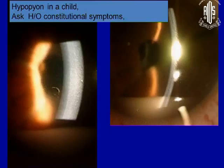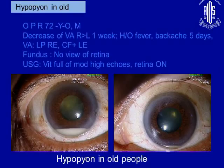When dealing with patients at the extremes of age, remember that idiopathic uveitis does not typically occur at the extremes of age. A young child presenting with a hypopyon and lot of cellular reaction turned out to have leukemia. Similarly, a 70-year-old presenting with hypopyon without history of trauma or surgery — think of a systemic masquerade. In this particular case it turned out to be non-Hodgkin's lymphoma.